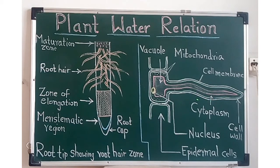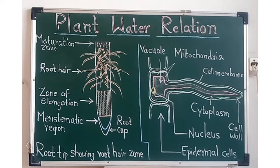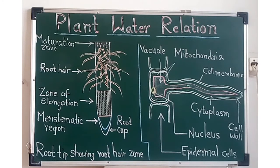The root hair is an unbranched, elongated, and tubular structure which shows the presence of a double-layered cell wall. Below the cell wall is a membrane called the cell membrane. The outer cell wall is made up of pectic compounds and the inner cell wall is made up of cellulose. The cell wall is freely permeable, whereas the cell membrane is selectively permeable. Root hair also shows presence of mitochondria, a nucleus pushed to one side, cytoplasm, and a vacuole.